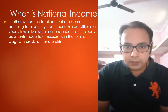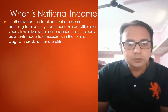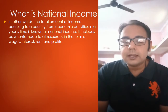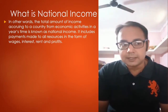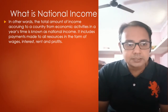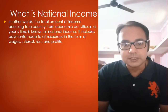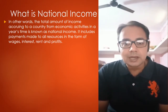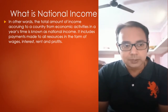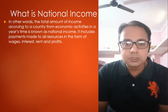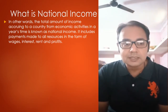National income includes payment made to all resources in the form of wages, interest, rent and profit. There are four things: first is wage — if you keep someone in your company as an employee, you give them salary every month, which is called wages. Second is interest — if you are running a company and borrow money from a bank, you pay a certain amount monthly, yearly or quarterly as interest.